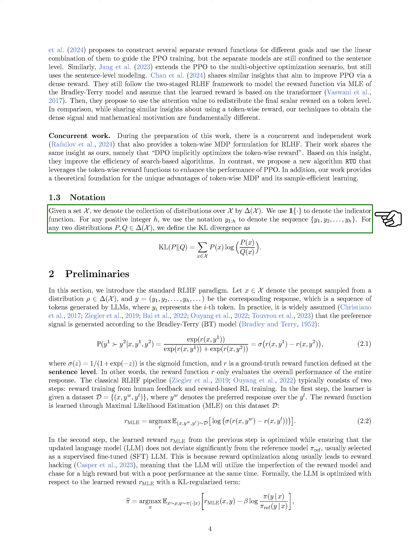In this section, we introduce the standard RLHF paradigm. We denote the set of distributions over a set X as Δ(X). The indicator function is denoted by 1{·}. When we have a positive integer H, we represent the sequence Y_1, Y_2, ..., Y_H as Y_{1:H}. For any two distributions P and Q in Δ(X), we define the KL divergence as the sum over all elements x in X of P(x) times the logarithm of the ratio P(x) to Q(x).